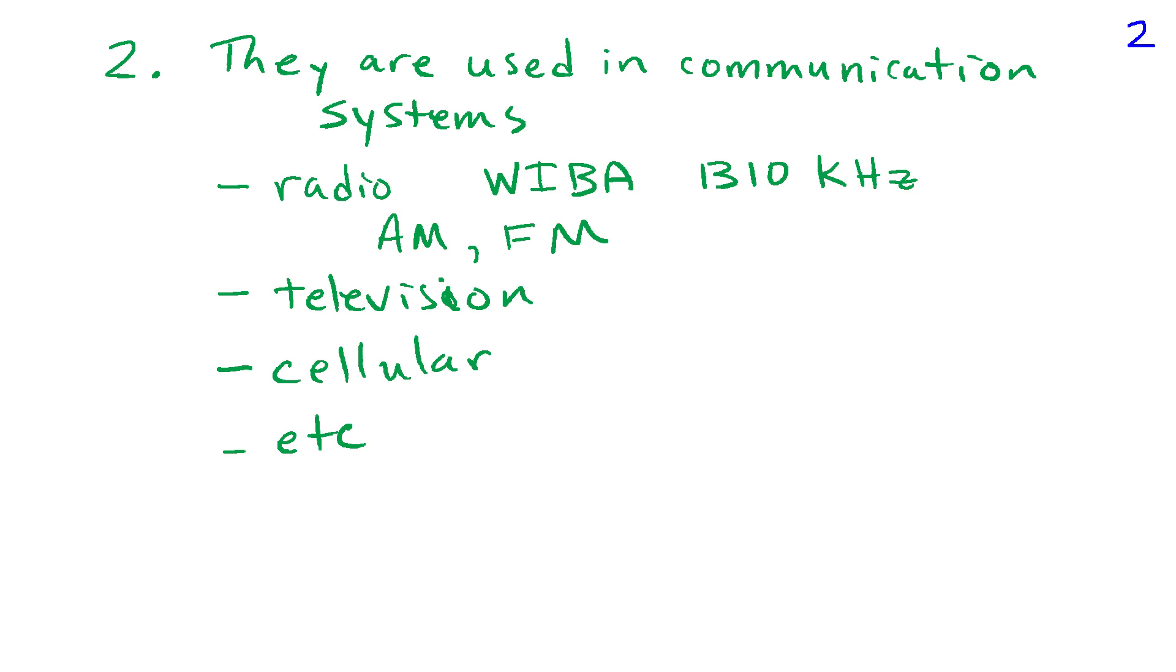The sinusoids are also used extensively in communication systems. In the United States, the Federal Communications Commission allocates specific frequencies for different purposes. So you have radio like AM and FM,